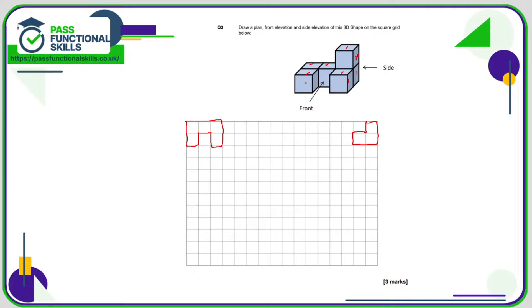And from the front, we would see one, two, three, four — so that would be three along the bottom and one on the top on the right-hand side.